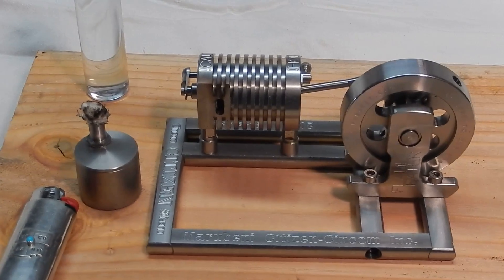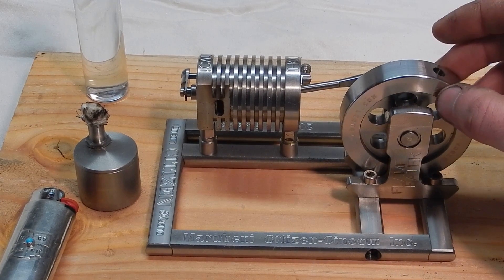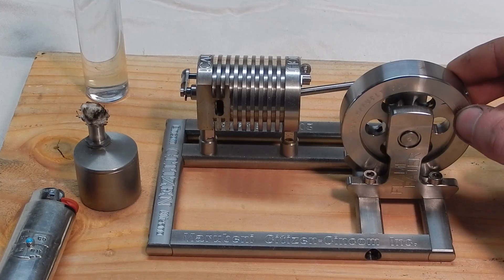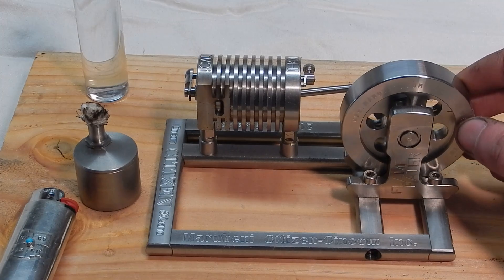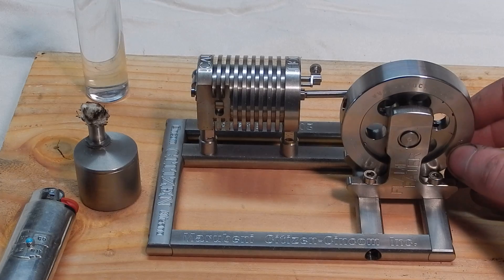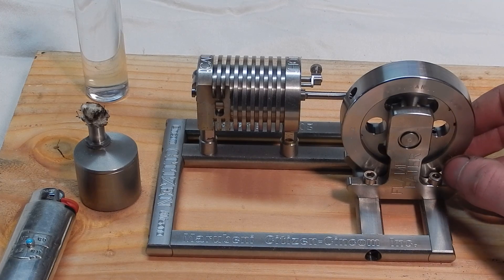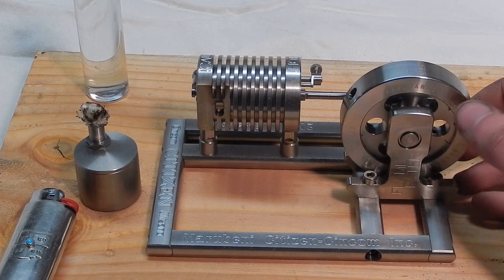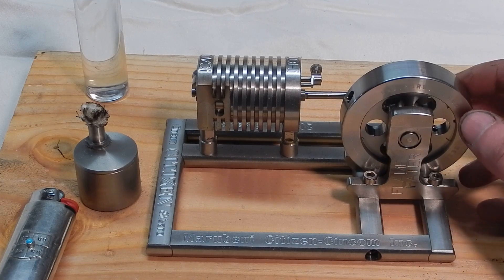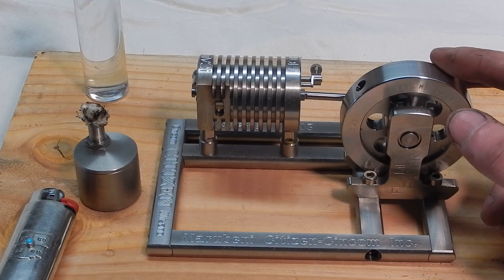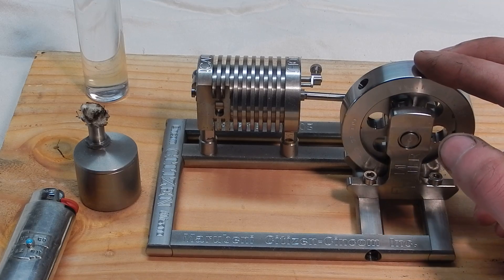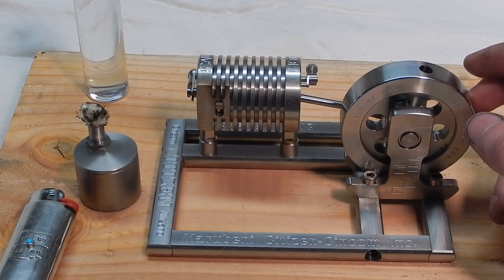You'll notice when the piston nears bottom dead center, it pulls that valve closed. Now we've got hot gas inside the cylinder and it's cooling off due to those cooling fins. So that creates a vacuum. These engines are also called vacuum engines, and now that vacuum will pull the piston back up.